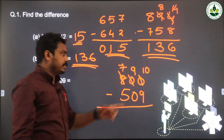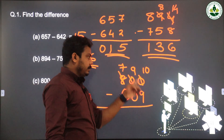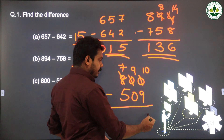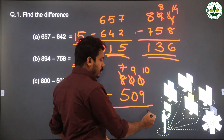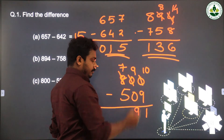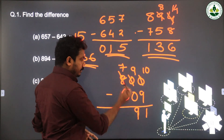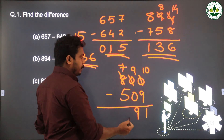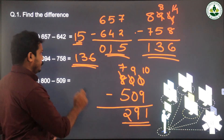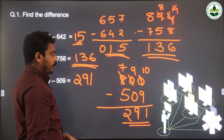The tens place becomes 9 instead of 0. Then 10 minus 9: 9 plus 1 is 10, so 10 minus 9 is 1. Then 9 minus 0 is 9. Then 7 minus 5 is 2. So the answer is 291.